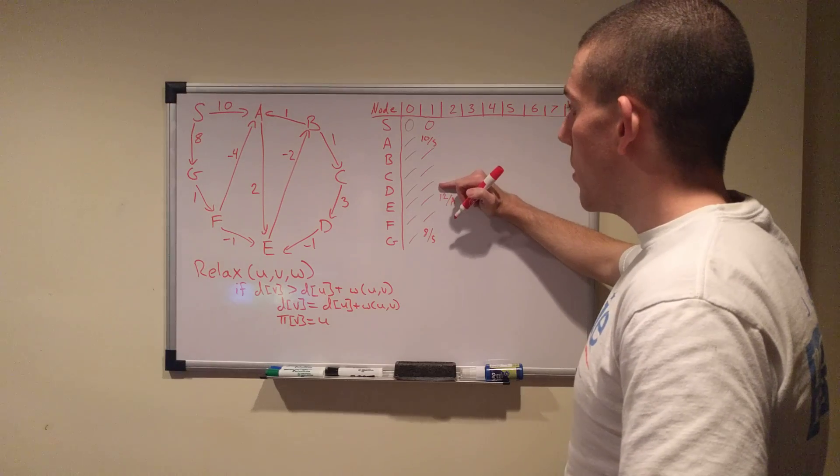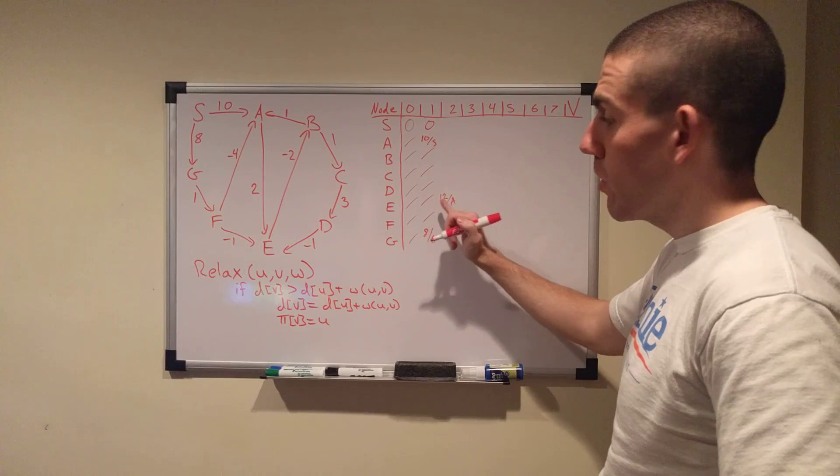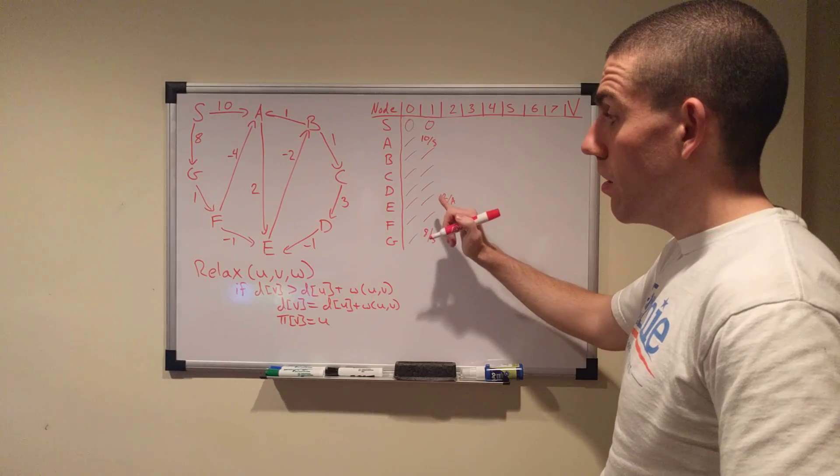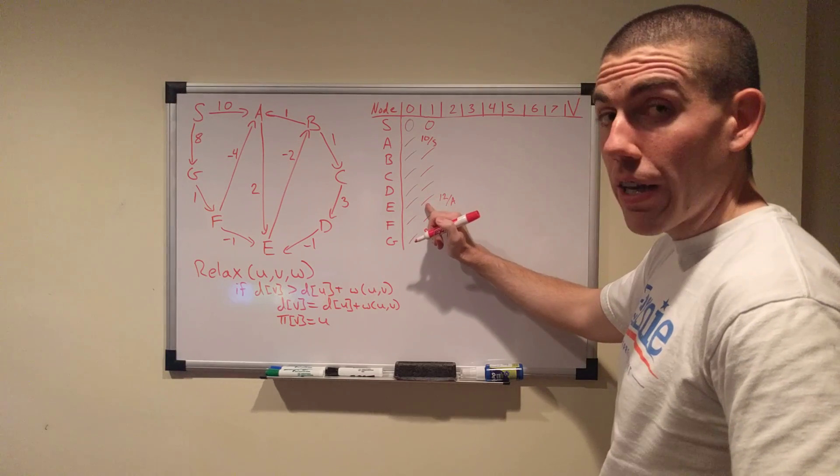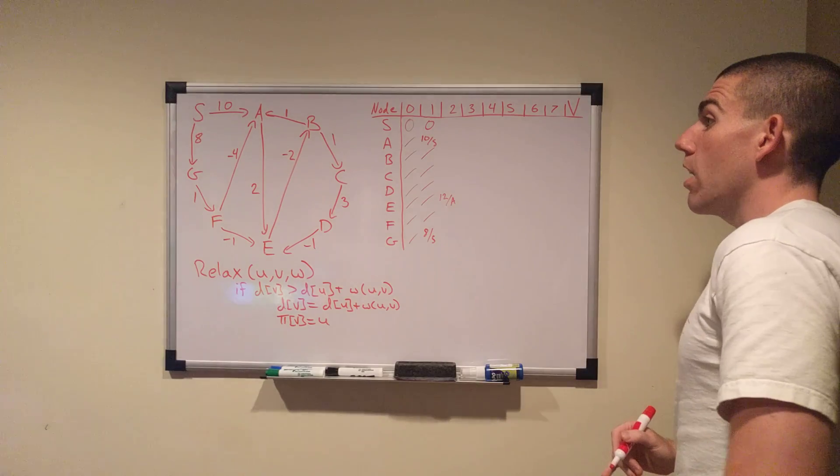B, nothing happens. C, nothing happens. D, nothing happens. E, nothing happens. Remember, because we're still using this version of the array. We just updated it over here, but there's nothing here yet. So, F, nothing happens.